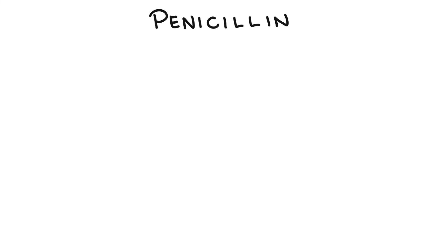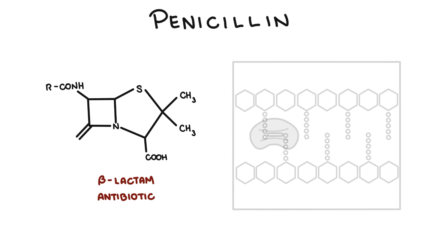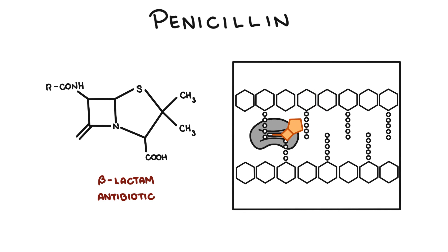In summary, penicillin is a medication used to manage and treat a wide range of infections. It is a beta-lactam antibiotic, and there are many groups or classes of penicillins, but they essentially work by binding to penicillin-binding proteins on the cell wall of bacteria, thus inhibiting bacterial cell wall synthesis and causing it to die. Thank you for watching.